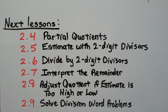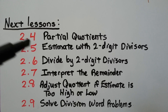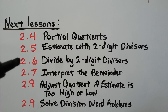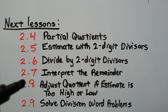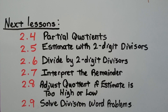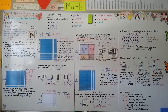This entire chapter 2 is about dividing whole numbers, and from beginning to end we're going to completely understand what's happening as we divide. Our next lesson will be about partial quotients, then we'll estimate with two-digit divisors, then do long division and divide by two-digit divisors. After that we'll interpret the remainder — did you know we can write it as a fraction? Then we'll adjust our quotient if our estimate is too high or too low, and end the chapter with solving division word problems. Stick with me and by the end of this chapter you'll really understand division. Stay safe and stay strong — see you next time when we talk about partial quotients!